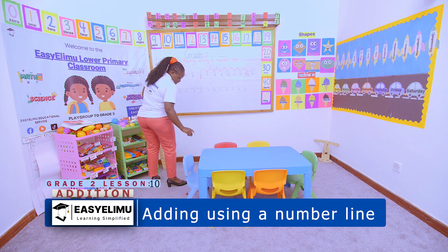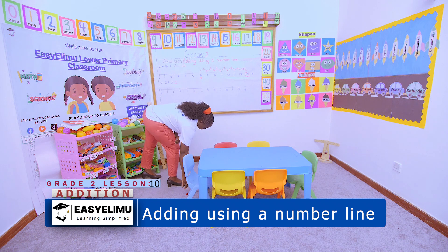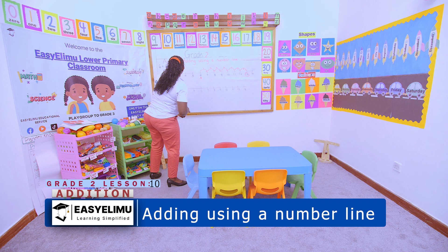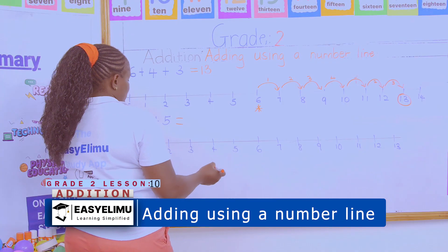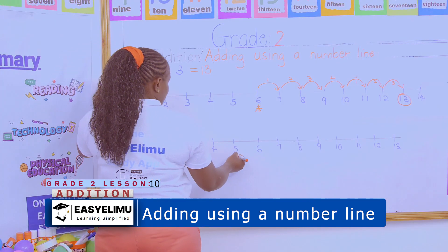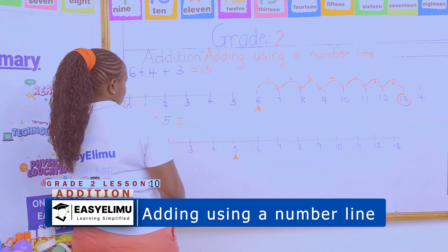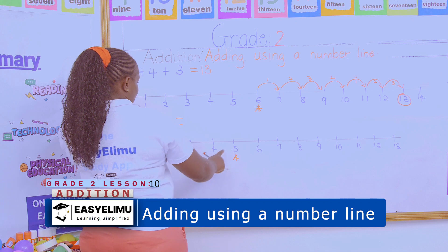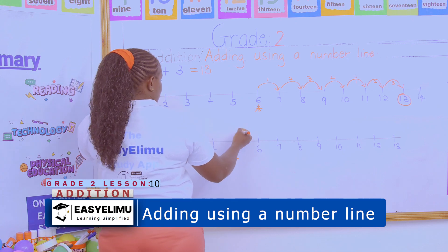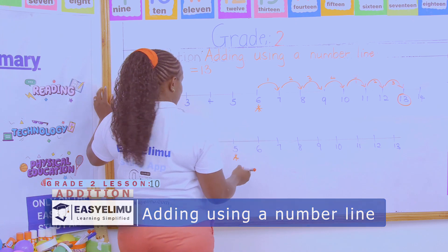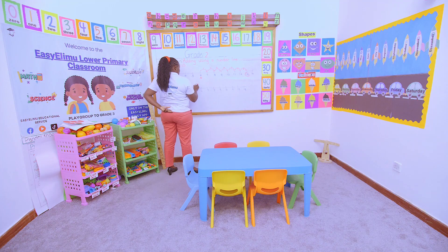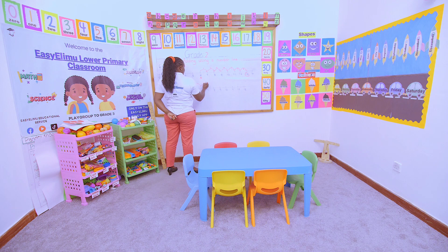You have here five plus two plus five. My starting number here is five, so I am going to move two steps first. So we have one, two.